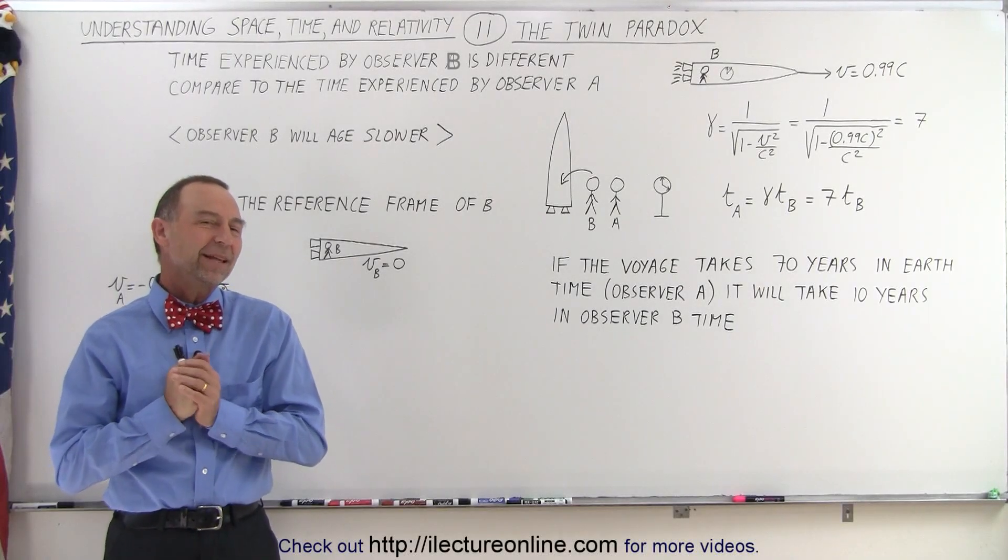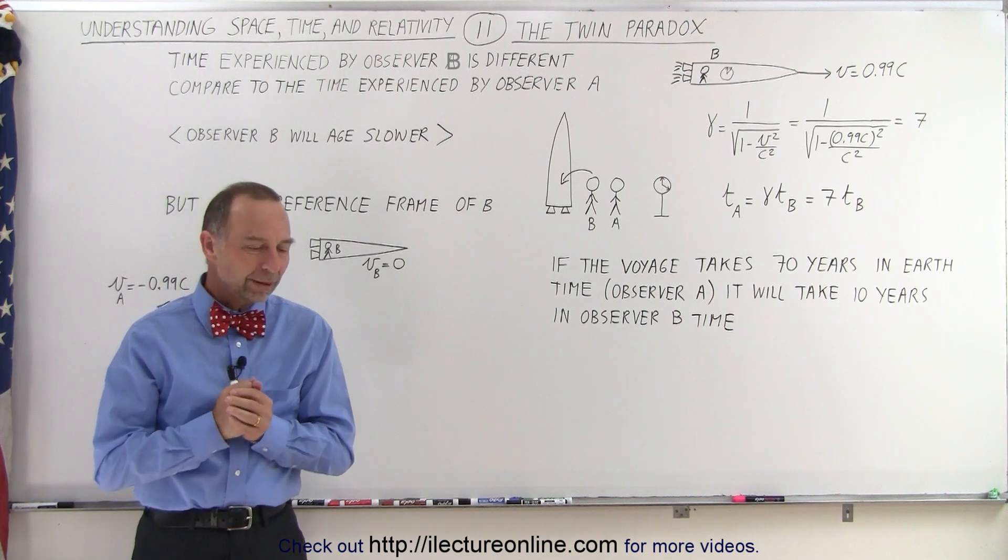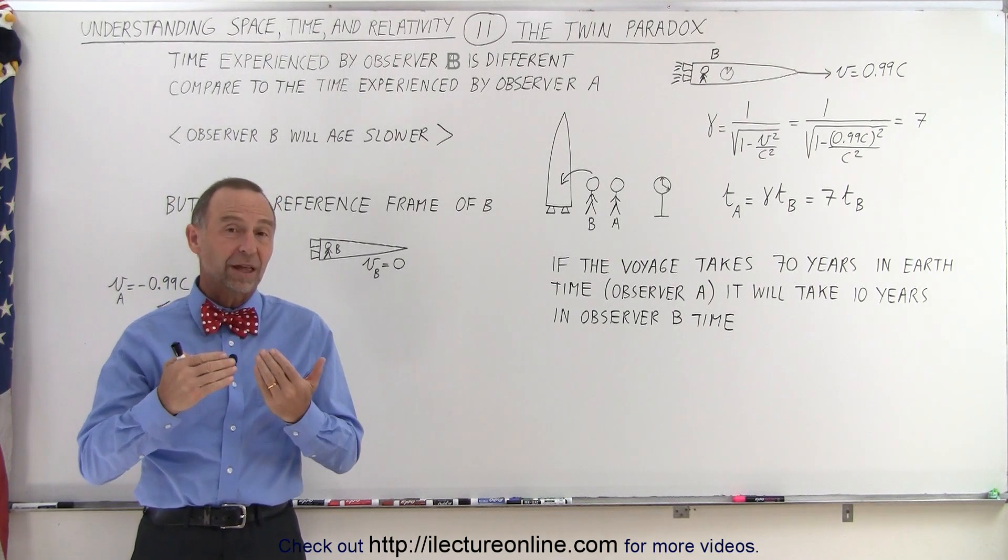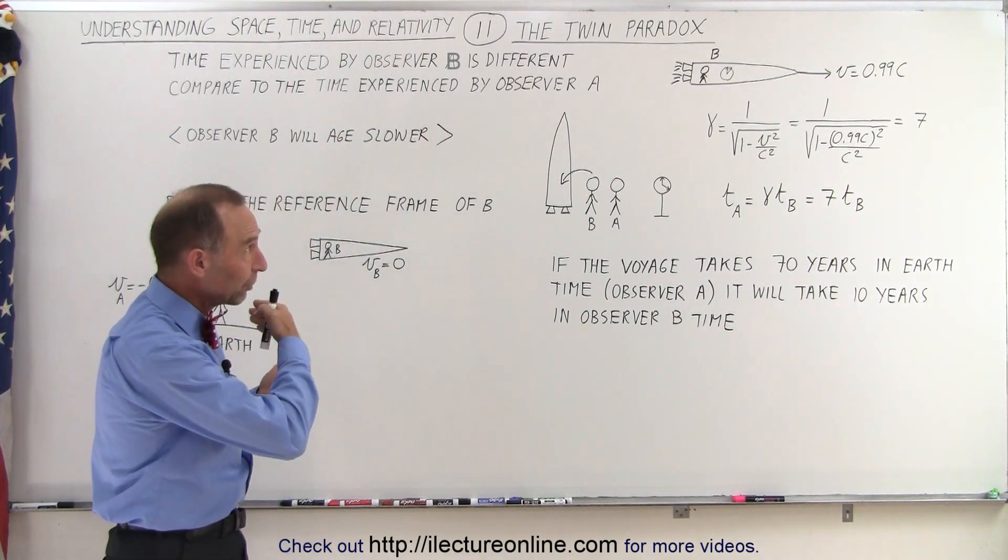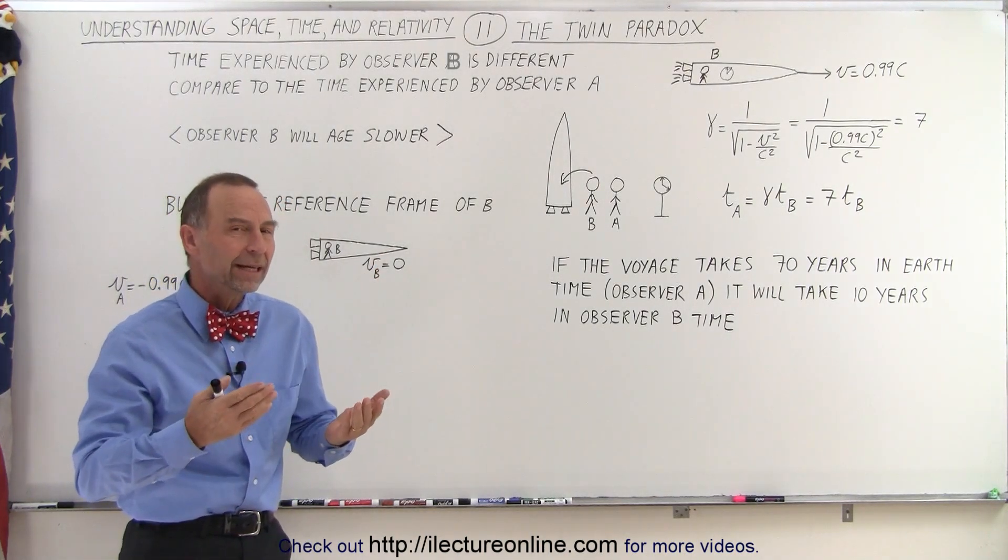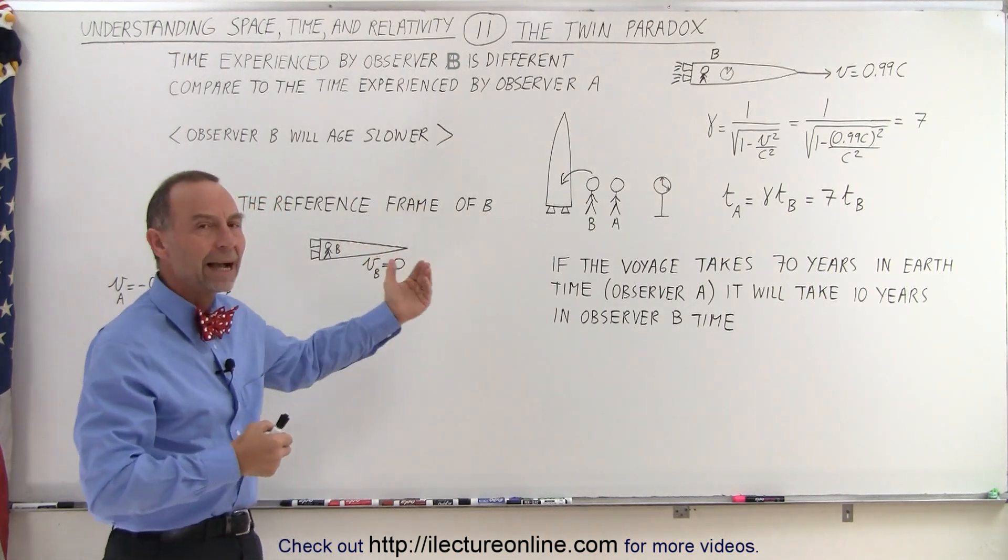Welcome to my lecture online. Now let's take a look at something called the twin paradox. What they began to realize was that if a person gets into a spaceship and begins to travel through space at a very high velocity, they will experience time in a different way than a person left behind on the Earth.